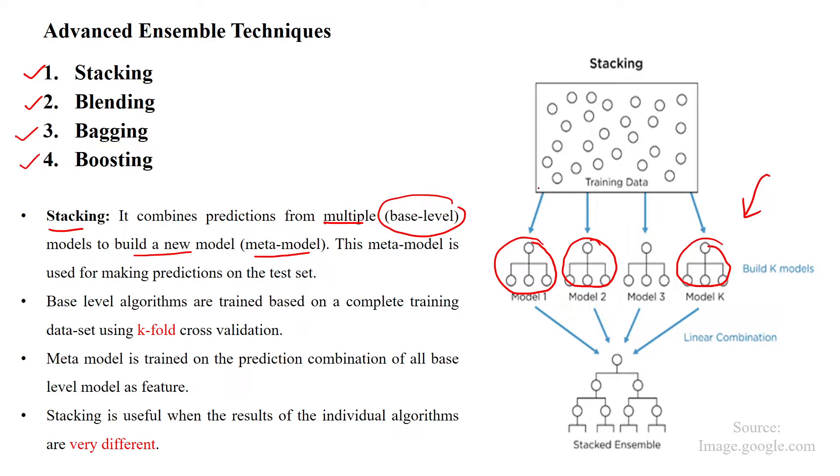So all the models are getting entire data set for classification or regression approach. So entire data set is passing into the model one then predicting the output for each sample. Then entire data set passing to the model two and predicting the output for each sample. Like that for all the models, k number of models, passing the data set and getting the output.